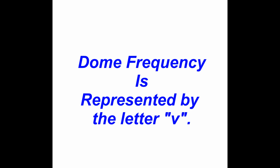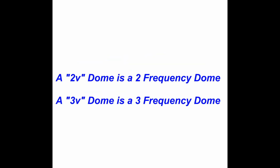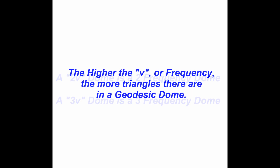Dome frequency is represented by the letter V. 2V is shorthand for 2 frequency. A 2V dome is a 2 frequency dome, and a 3V dome is a 3 frequency dome. The higher the V, or frequency, the more triangles there are in a geodesic dome.